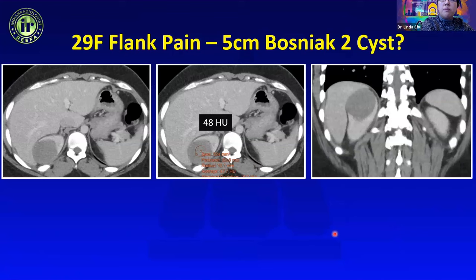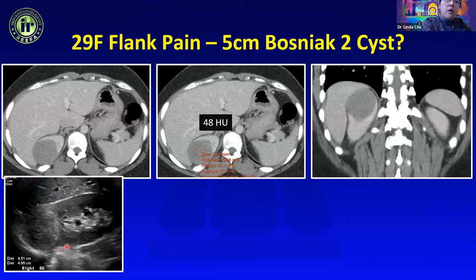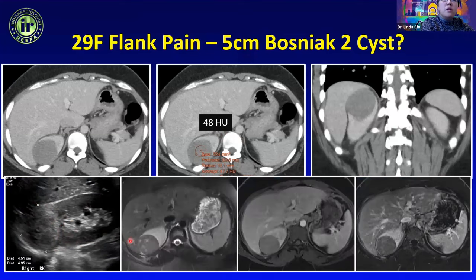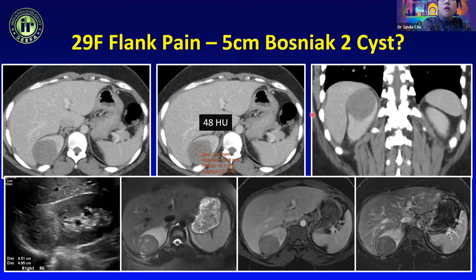Sometimes people mix up the rules. A young woman with flank pain had a lesion at 48 HU on contrast-enhanced exam, and it was called a Bosniak 2 cyst with no follow-up. When she returned with persistent pain, ultrasound showed a heterogeneous lesion, and MRI revealed a T2 hypointense lesion with internal enhancement — confirmed as papillary carcinoma. On a contrast-enhanced exam, a lesion more than 20 HU is technically indeterminate and should not be dismissed as a Bosniak 2 cyst.